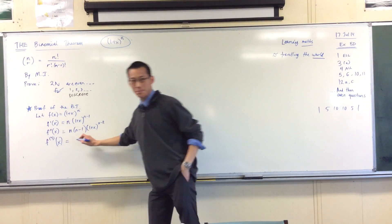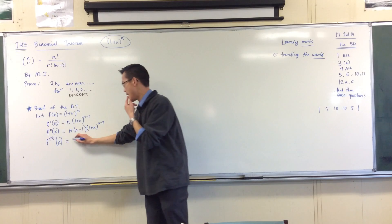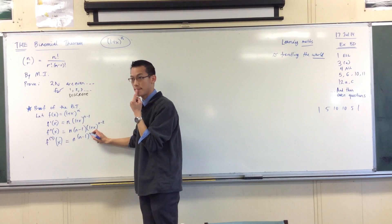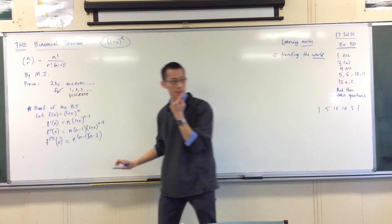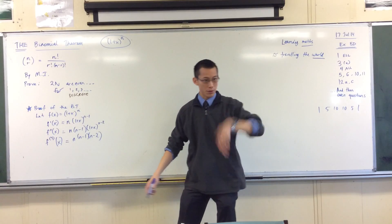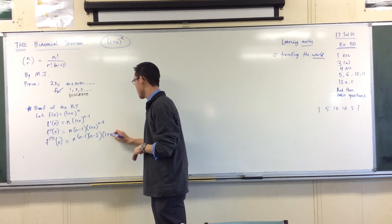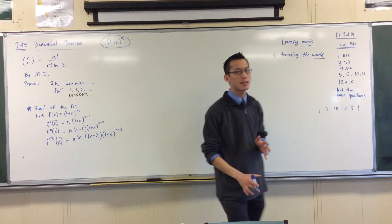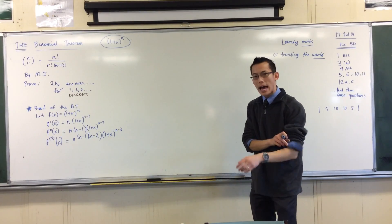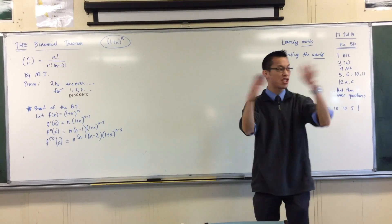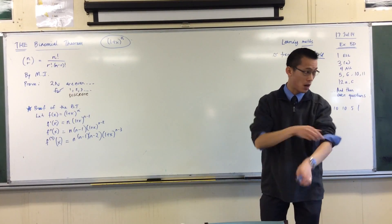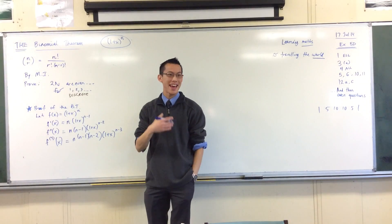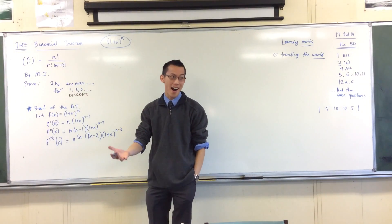What do you get for the third derivative? It's n times (n minus 1) times (n minus 2), and the power comes down and reduces by 1 each time. Now, what happens if I differentiate some indeterminate number of times — not 1, 2, or 3, but say r times?